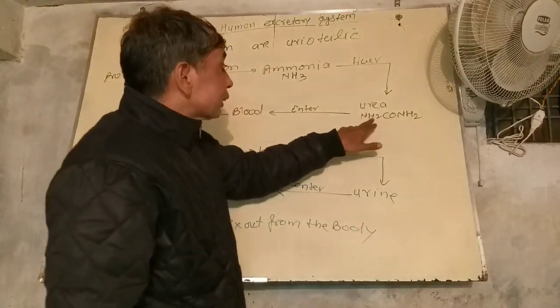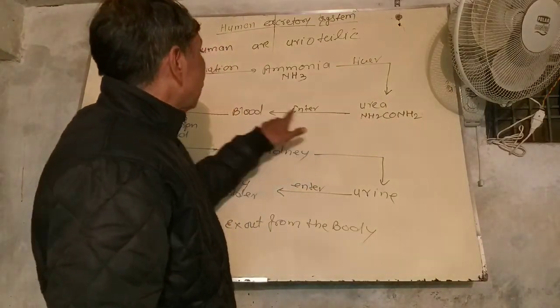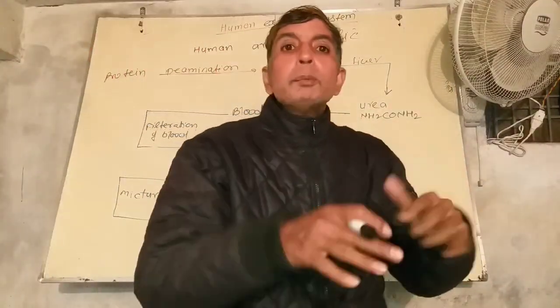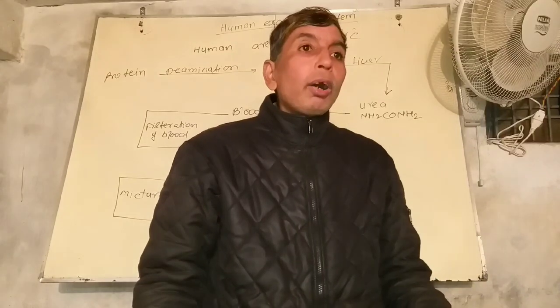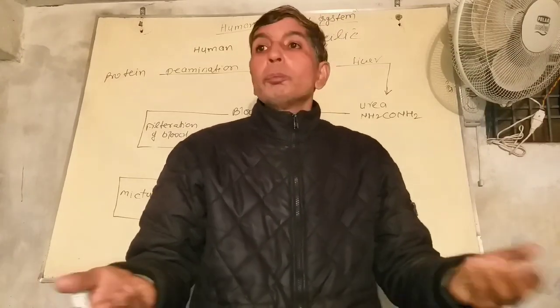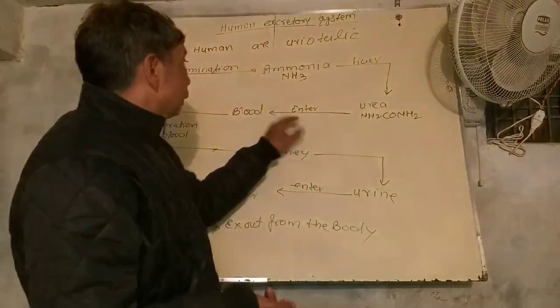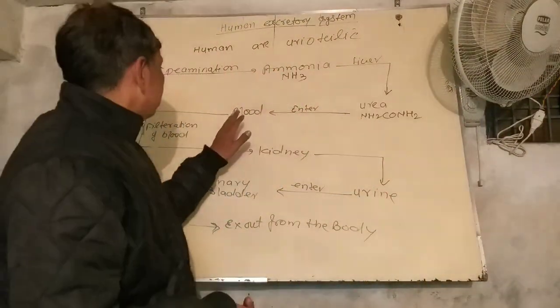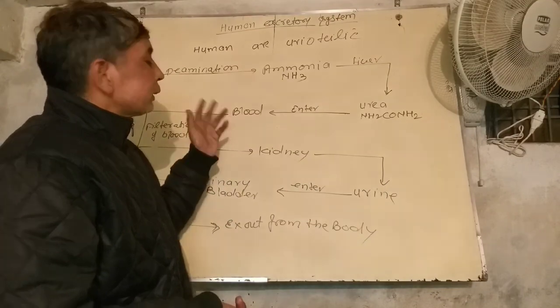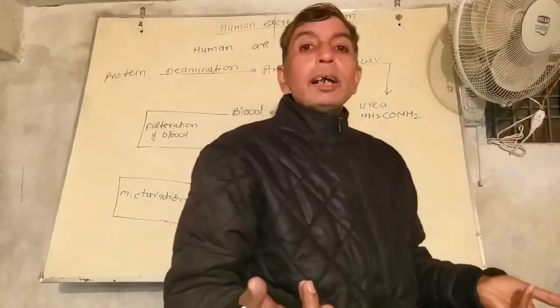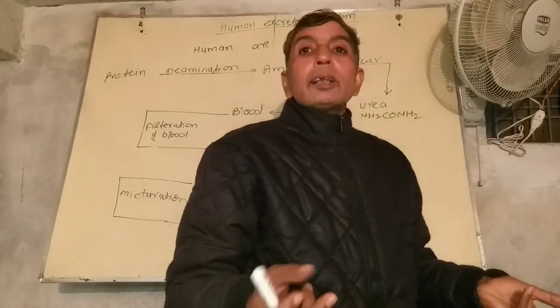The liver draws the urea into the blood. Urea is mixed in the blood because urea dissolves in water. Blood is pumped by the heart.